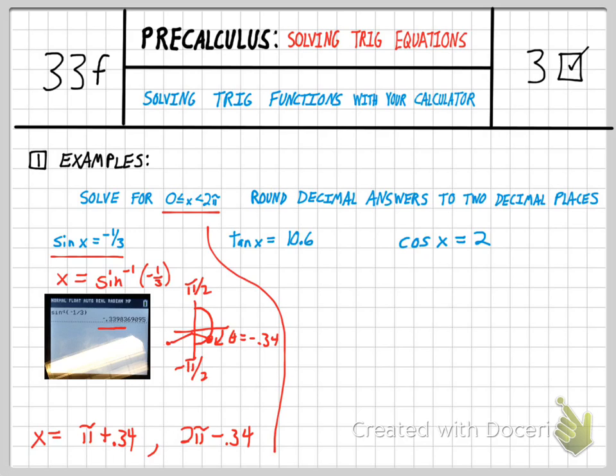Let's look at the next one, the tangent of x equals 10.6. Again, a very unfamiliar value. So I'm going to pull out my calculator. Okay, if I do inverse tangent of 10.6, I get the angle 1.48 radians. That is a first quadrant answer. My reference angle would be 1.48.